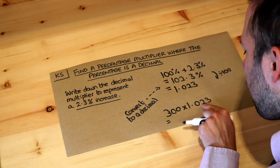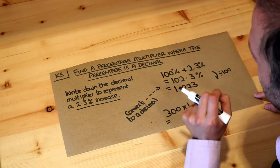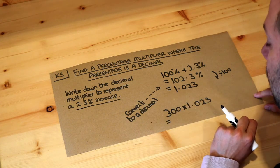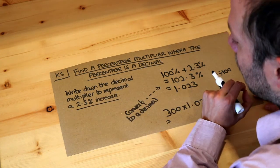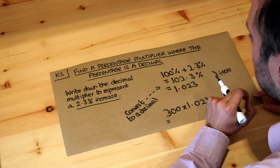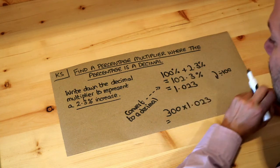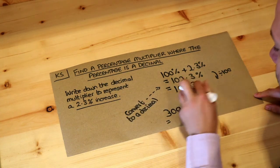If you multiply by a number just slightly more than 1, it's going to have the effect of just slightly increasing 300. Indeed, increasing something by 2.3% is only going to be a small change—it's only going to increase it slightly. So that feels right as an answer.